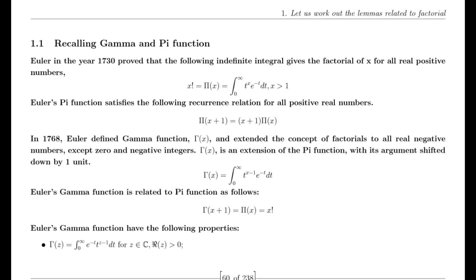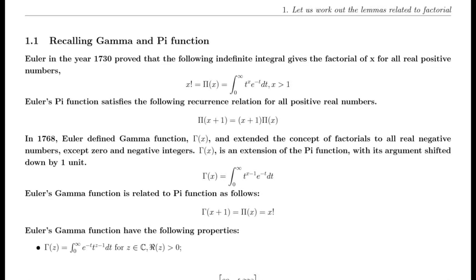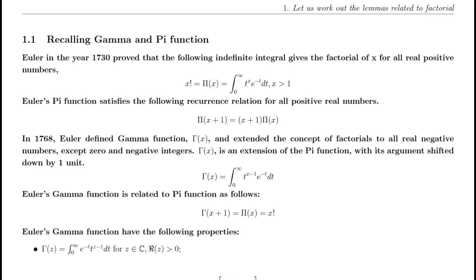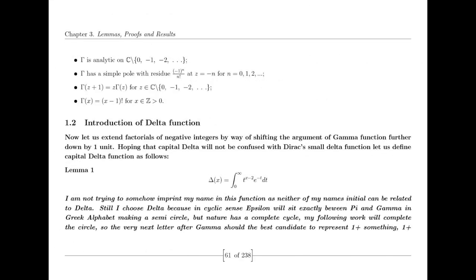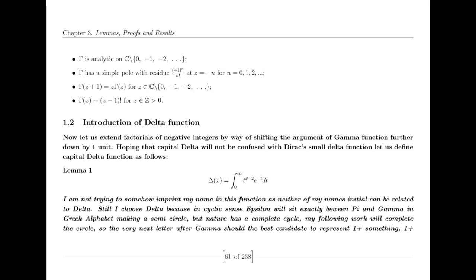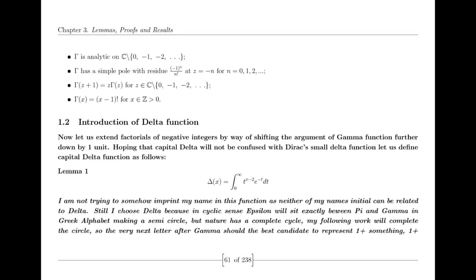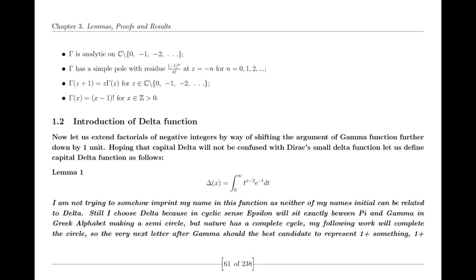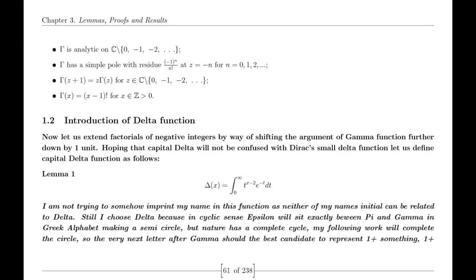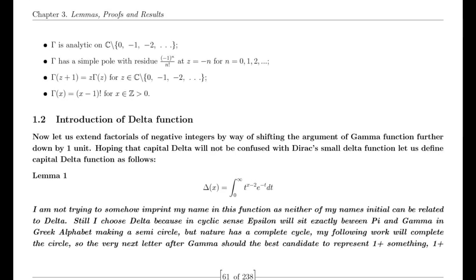The unification led to a profound transformation of the zeta function. It evolved into an entire function, meaning it became holomorphic across the entire complex plane. But this transformation wasn't just about removing singularities — it reshaped the very nature of the zeta function's behavior. In this new form, the zeta function reaches its maximum modulus not within the traditional boundaries but beyond the unit circle, on what I describe as the boundary of the dual unit circle. This boundary became a critical region, revealing the peak of the function's amplitude.